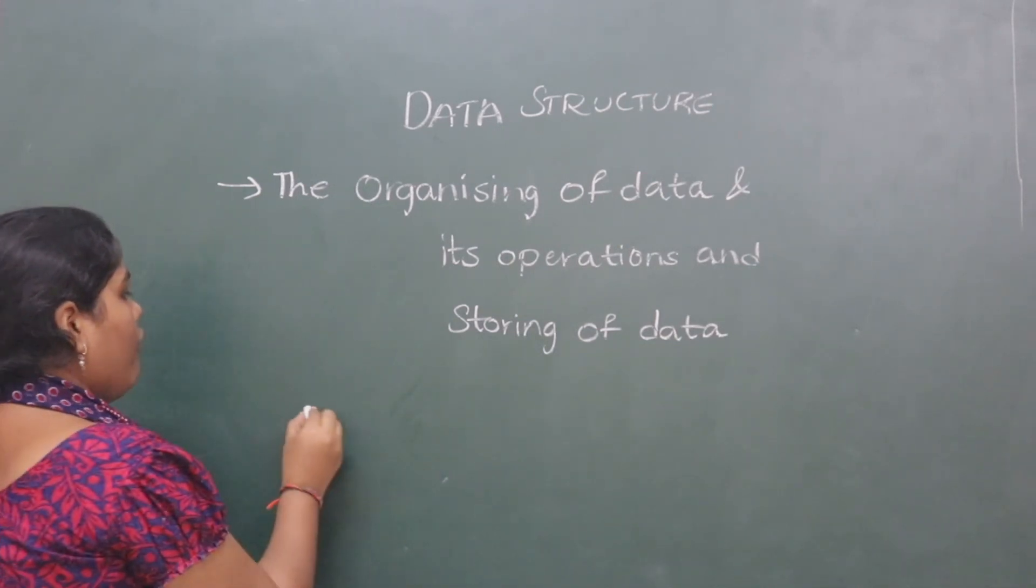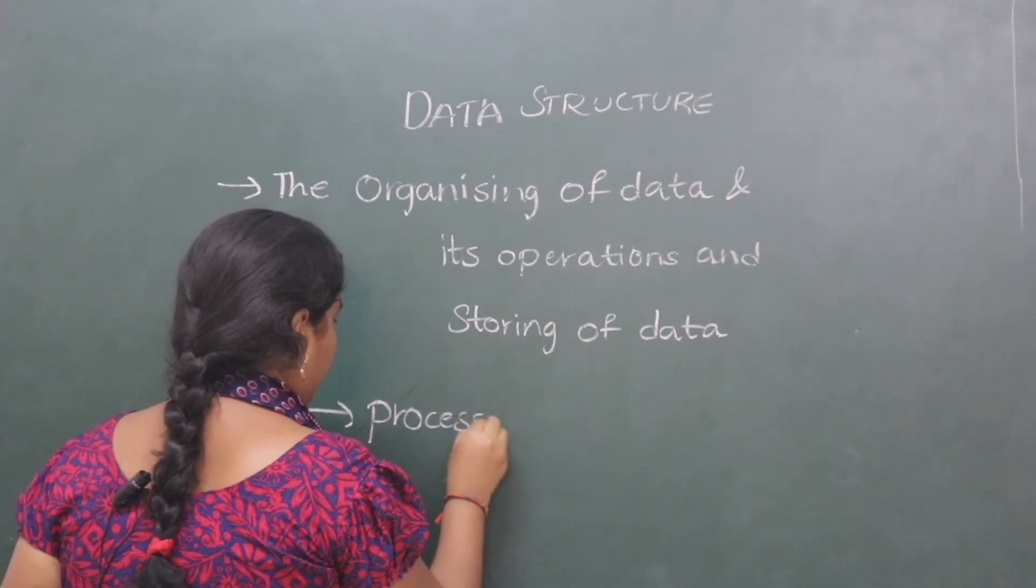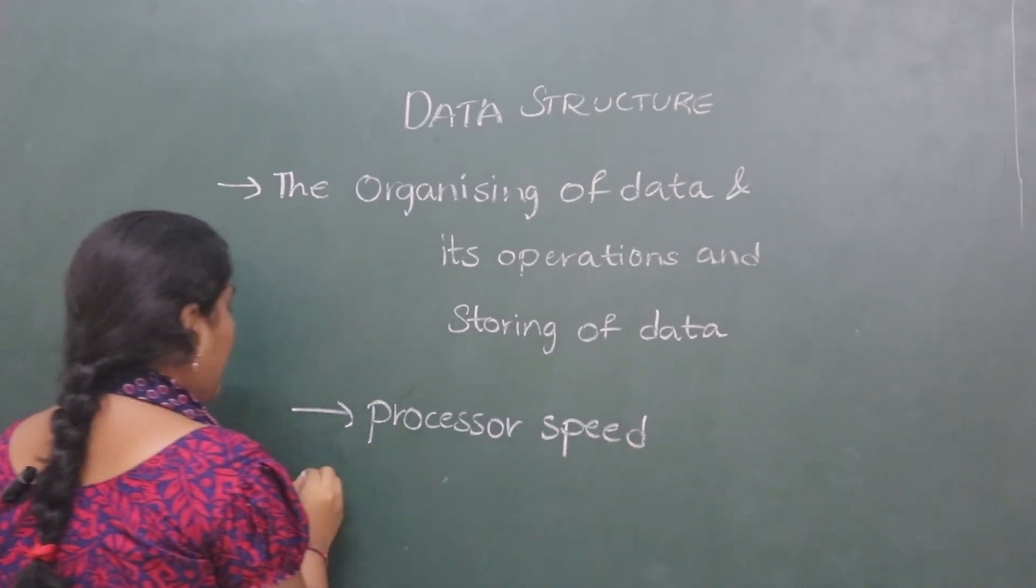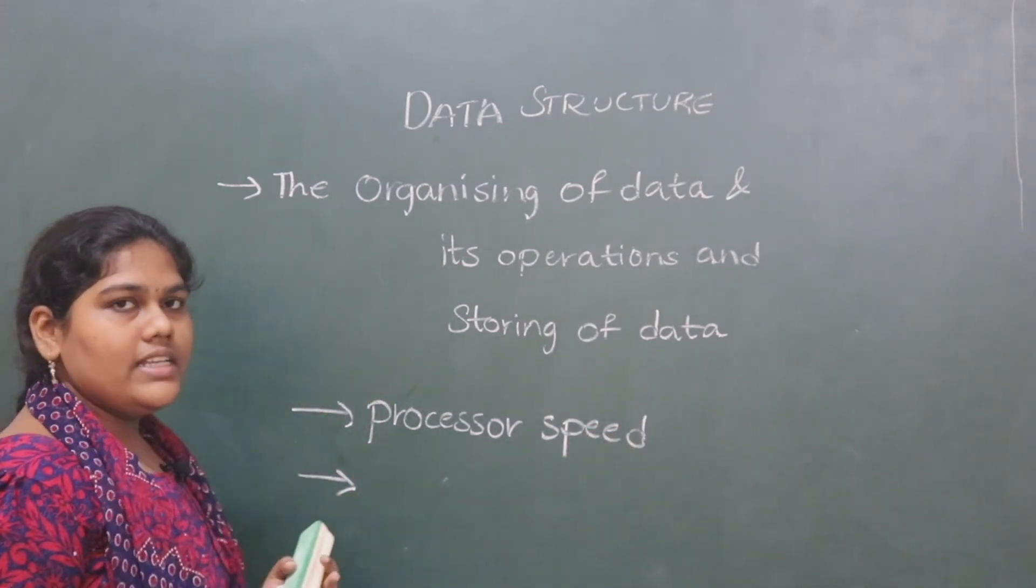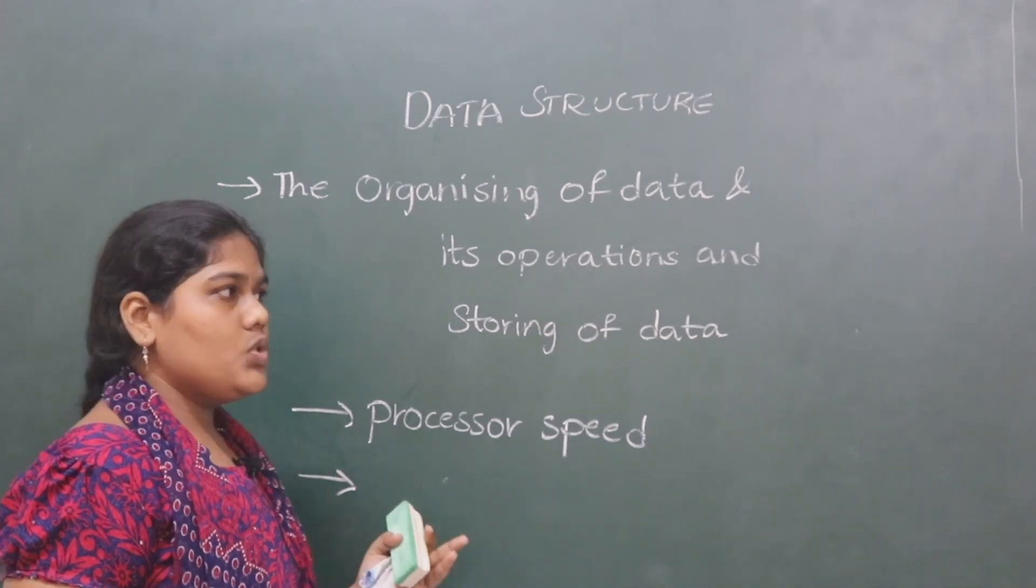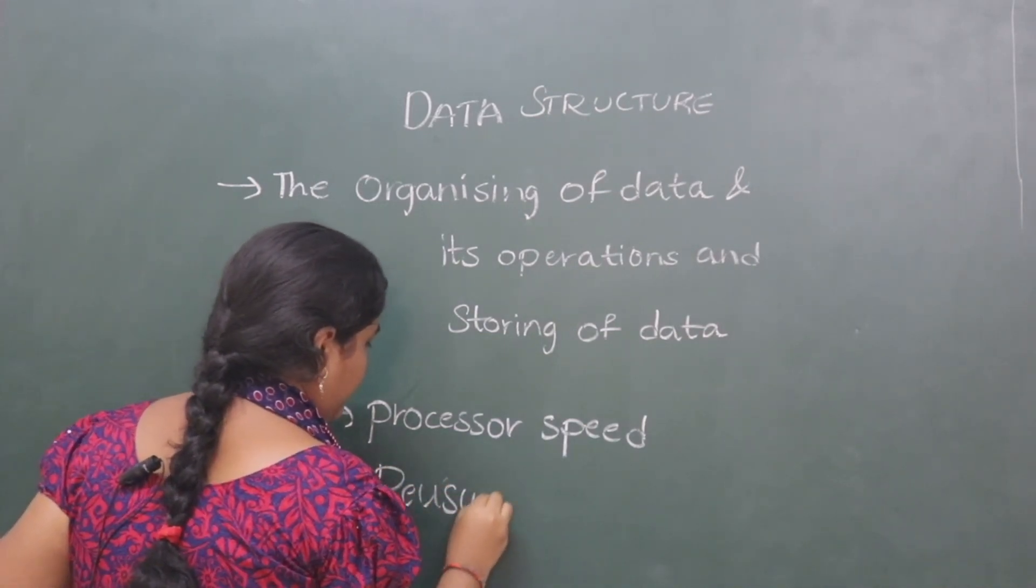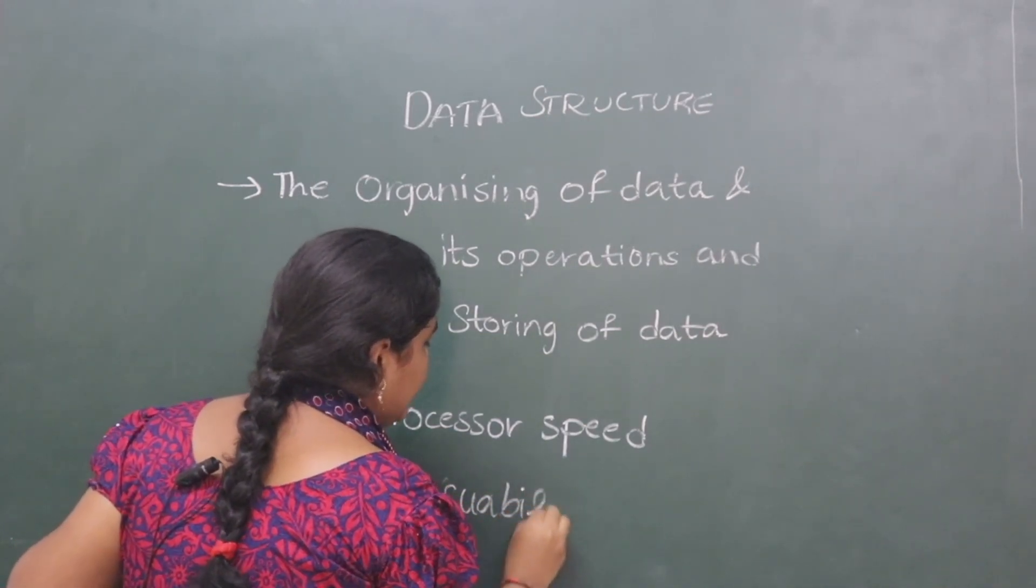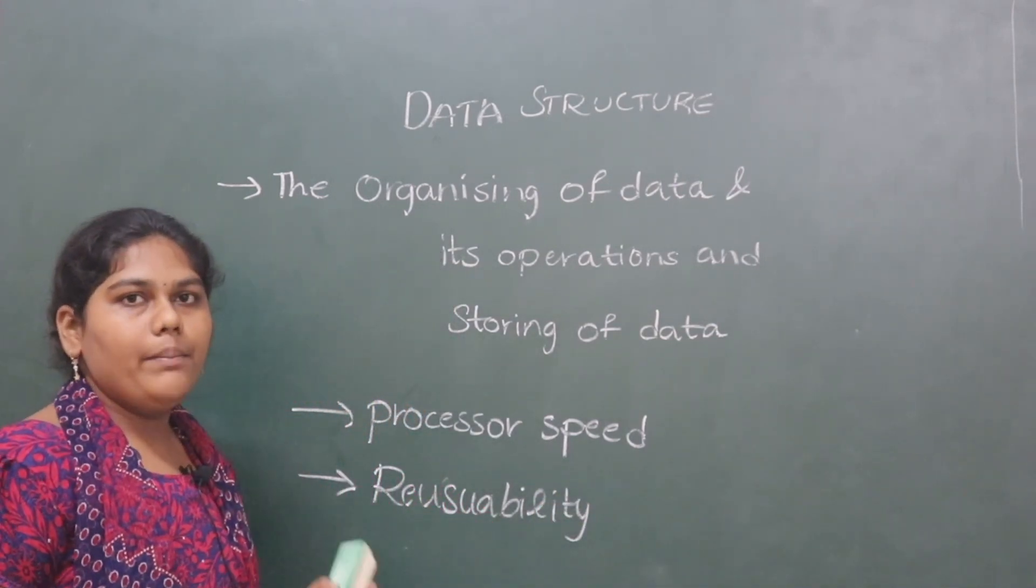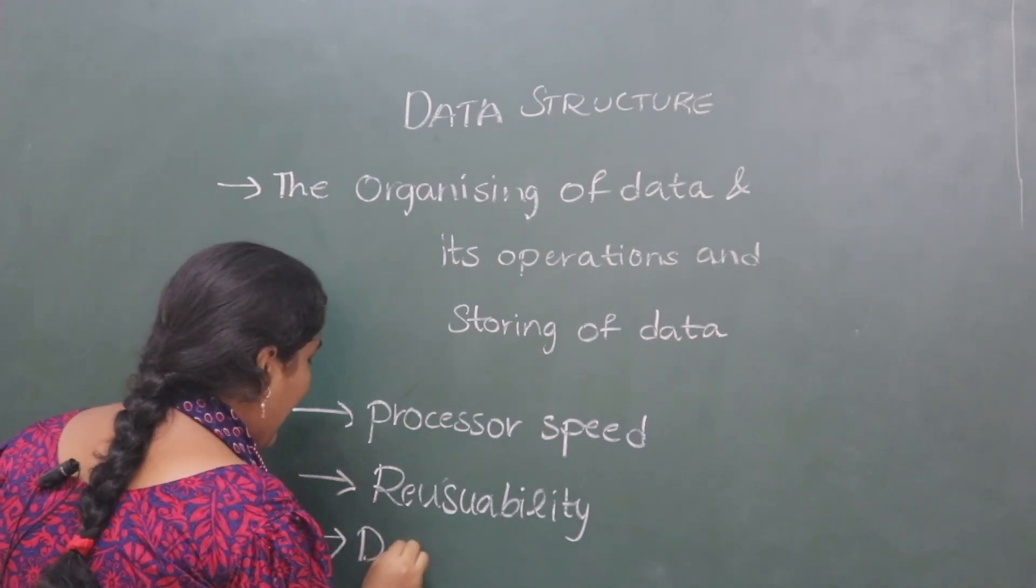The data structure gives the advantage of processor speed. As the data is organized in different fashion or organized in a store, it is used for reusability. Reusability means we can use the stored data many times. Another advantage of data structure is its data abstraction.